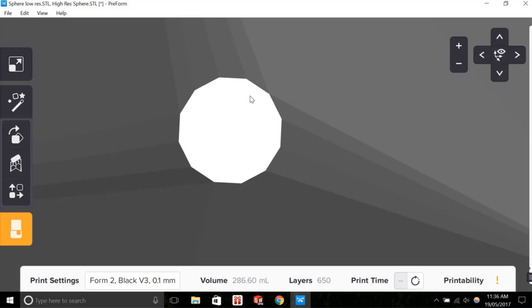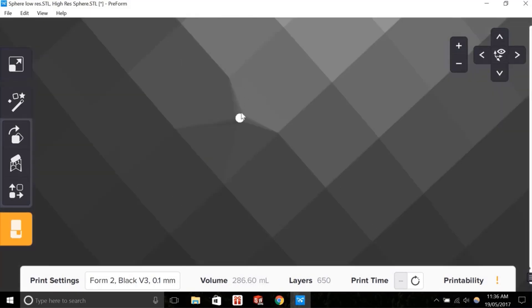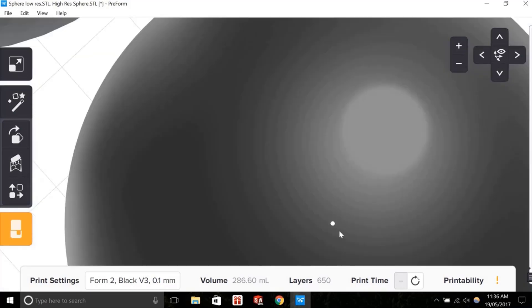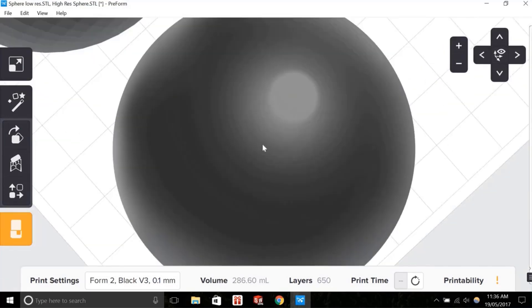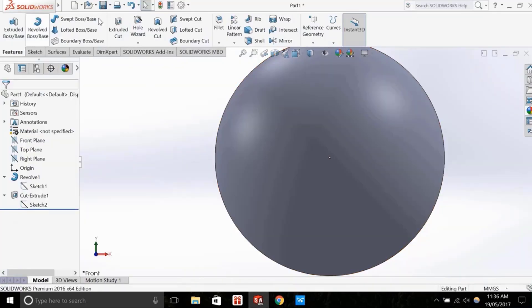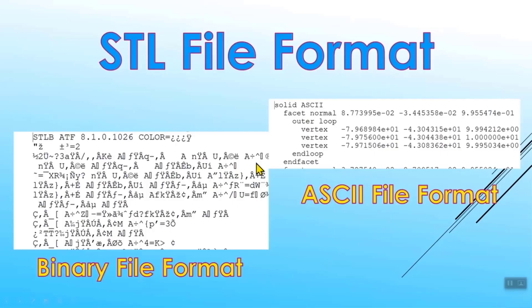How does an STL file store information about facets? The STL file format provides two different ways of storing information about the triangular facets that tile the object surface. These are called ASCII encoding and binary encoding. In both formats, the following information of each triangle is stored: the coordinates of the vertices and the components of unit normal vector to the triangle. The normal vector should point outwards with respect to the 3D model.